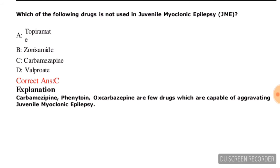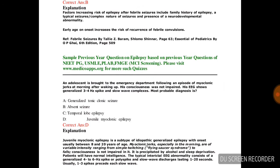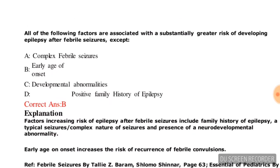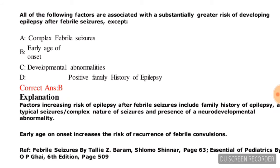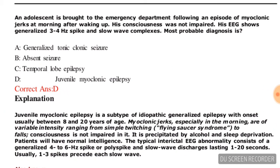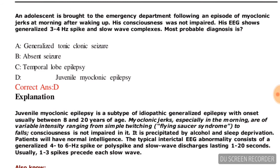Next question: all of the following factors are associated with substantially greater risk of developing epilepsy after febrile seizures, except — options are complex febrile seizures, early age of onset, developmental abnormalities, or positive family history of epilepsy. The correct answer is early age of onset — option B is correct.